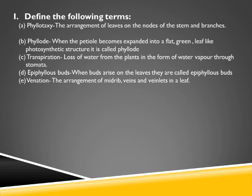Phylode: when the petiole becomes expanded into a flat, green, leaf-like photosynthetic structure, it is called the phylode. The actual leaf is absent, but the petiole becomes expanded into a green, flat, photosynthetic structure. In some plants the leaf may be in the form of small leaflets at the tip, but the petiole functions as the photosynthetic structure. Transpiration: loss of water from the plants in the form of water vapor through tiny openings known as stomata.